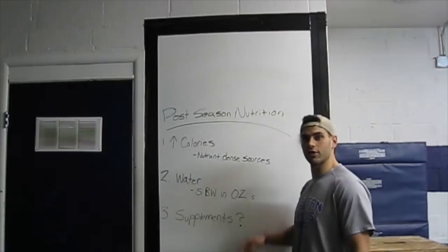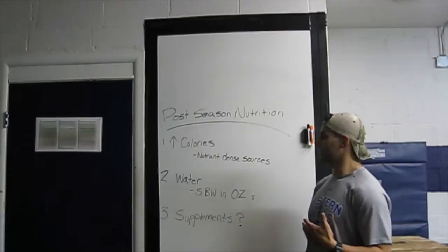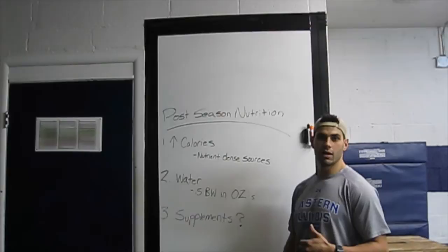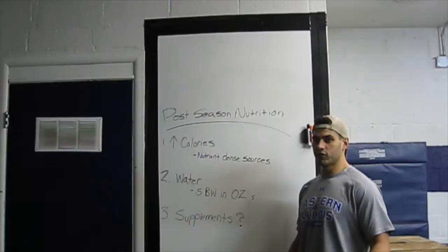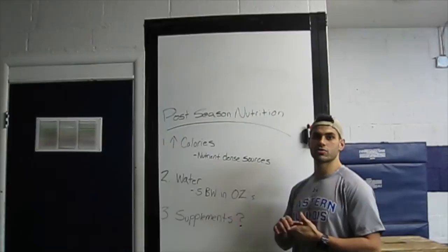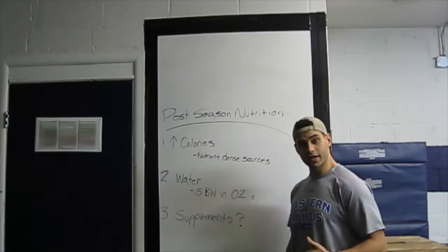So first thing you want to do is increase your calories. We want to stick with nutrient-dense sources. What that means is you want to be getting stuff that has a lot of bang for your buck. So stay away from chips, all types of junk food, pastries, all that crap and stick with whole foods like lean meats, starches like potatoes, rices, oatmeal, and a lot of fruit and vegetables.